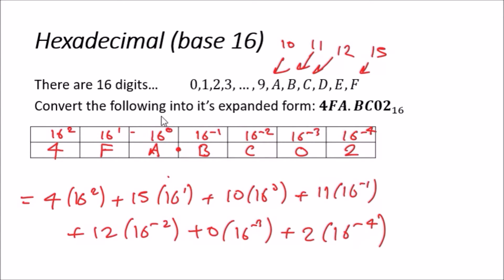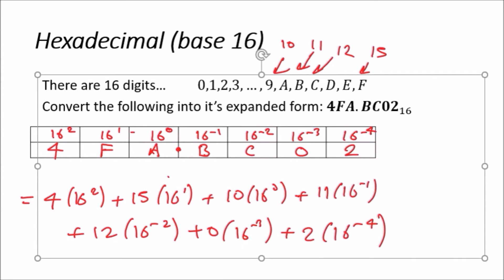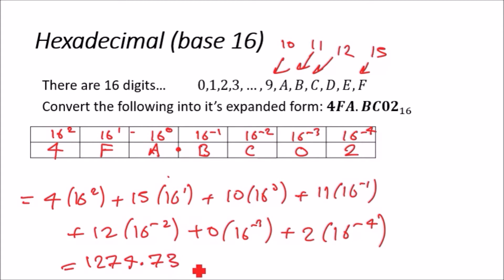Okay, I got 1274 point—it's quite a big number—73.4406. It makes sense because we have really tiny fractional powers.